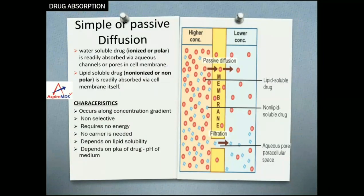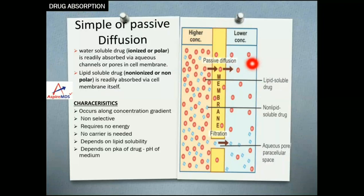Simple diffusion is nothing but diffusion along the concentration gradient. The red molecules represent lipid-soluble drugs and the blue molecules represent water-soluble drugs. Lipid-soluble drugs can easily pass through the membrane because they diffuse in the lipid. But water-soluble drugs need an aqueous pore to pass through. So the ionized or polar part of a drug is readily absorbed via aqueous pores, whereas the lipid-soluble non-ionized part can be readily absorbed via the cell membrane itself.